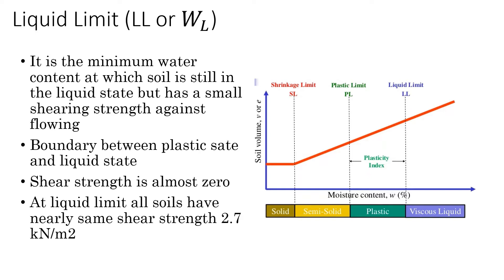The liquid limit is the minimum water content at which the soil behaves as a liquid. At this point, shear strength is very small — nearly zero. It is the boundary water content between the liquid state and the plastic state.